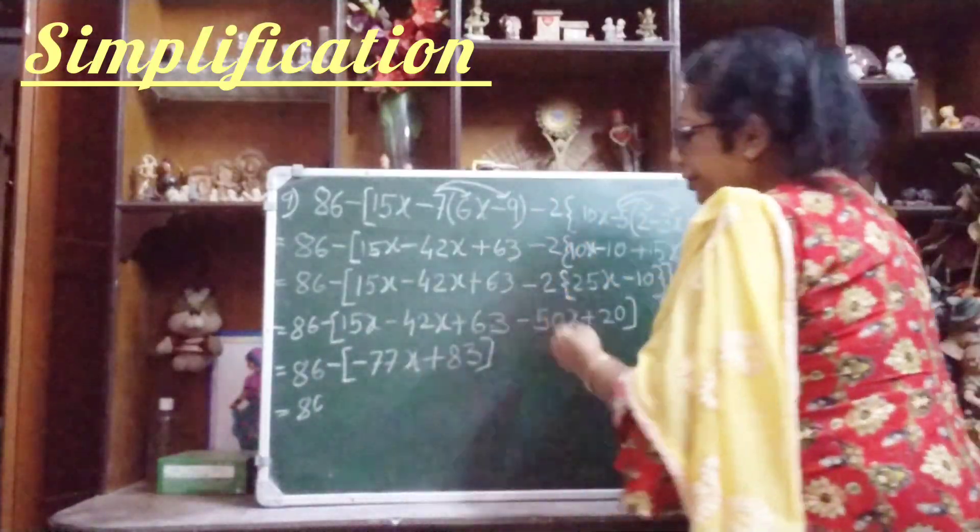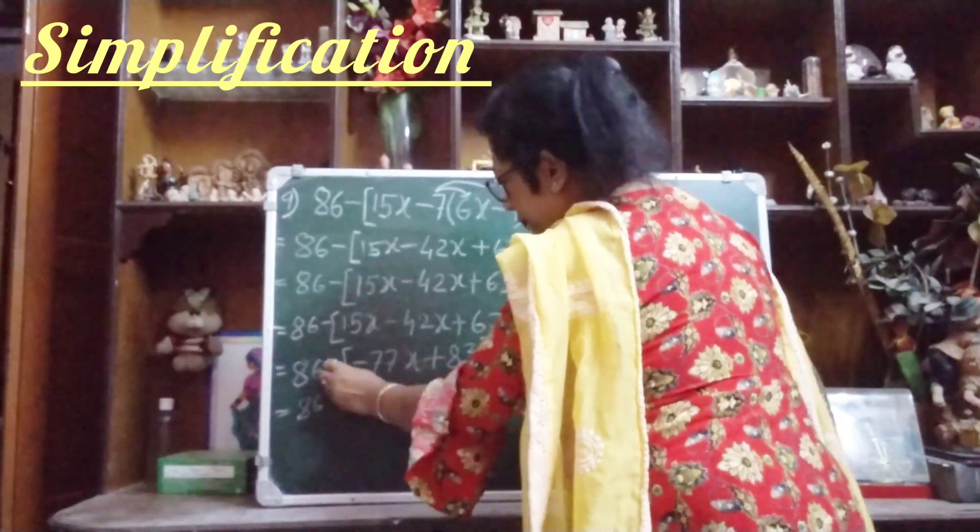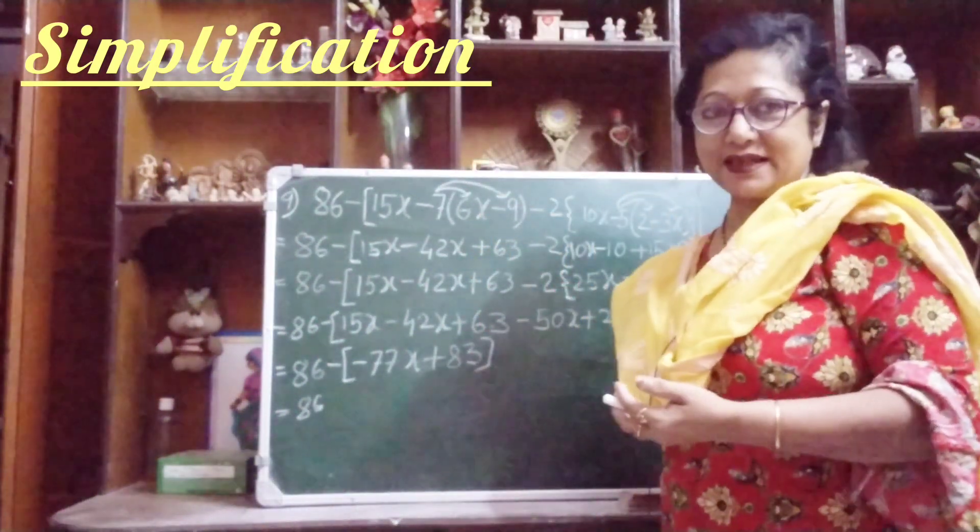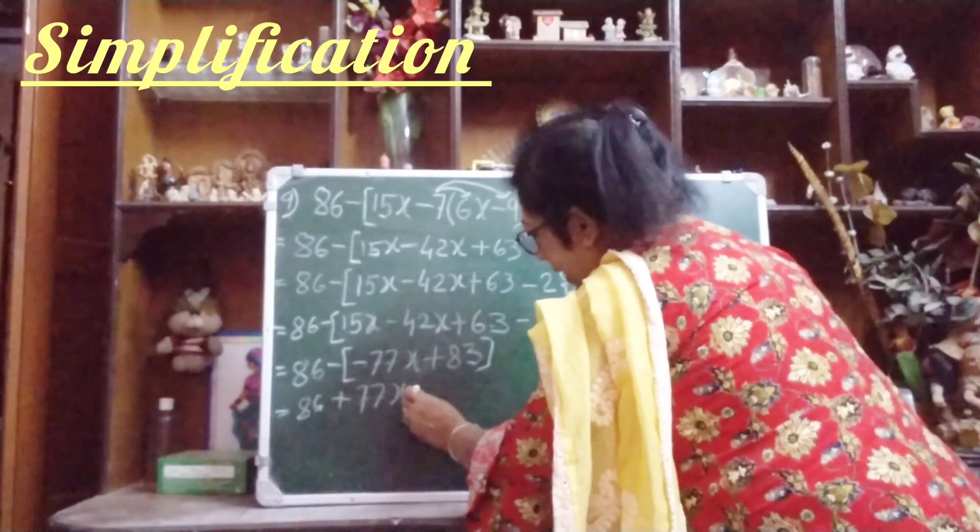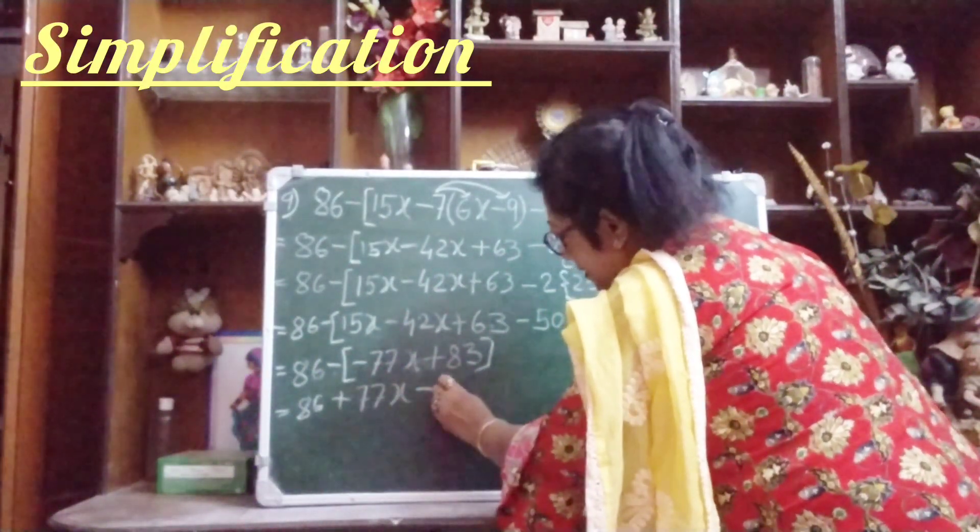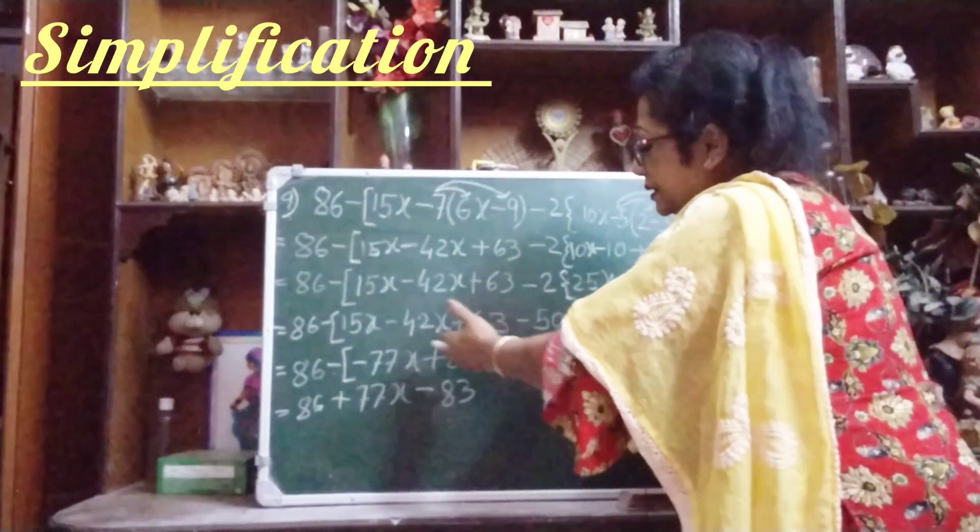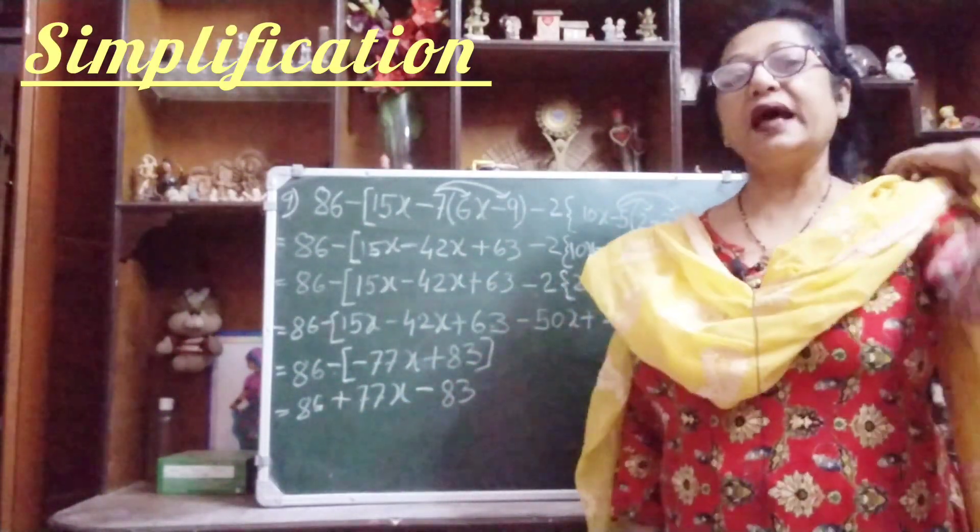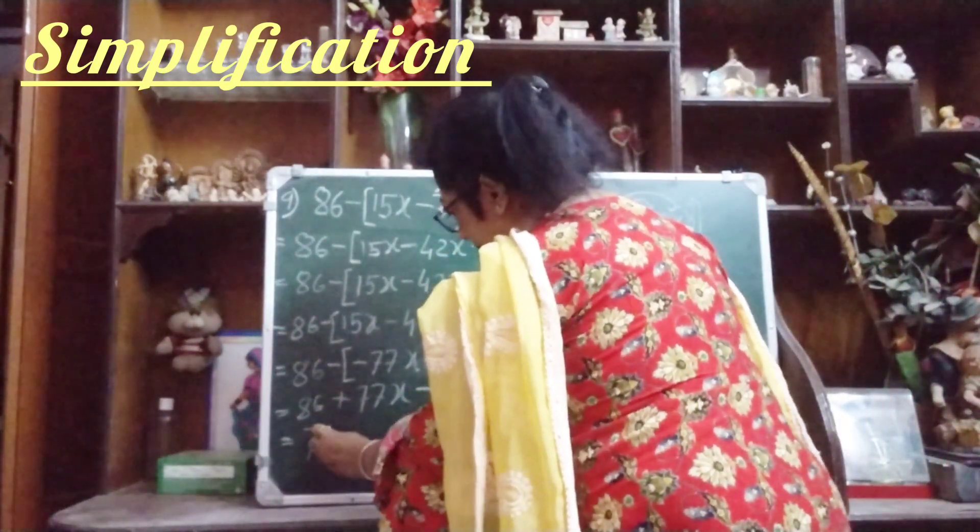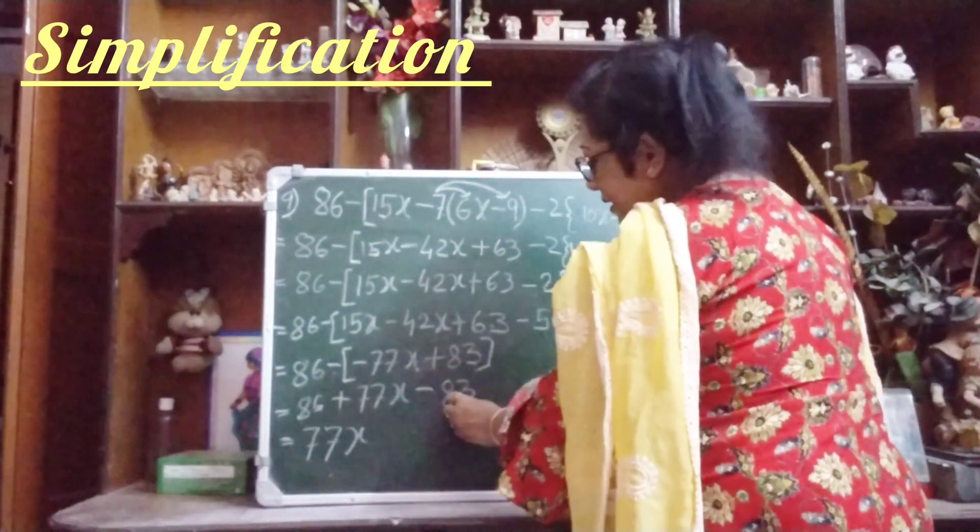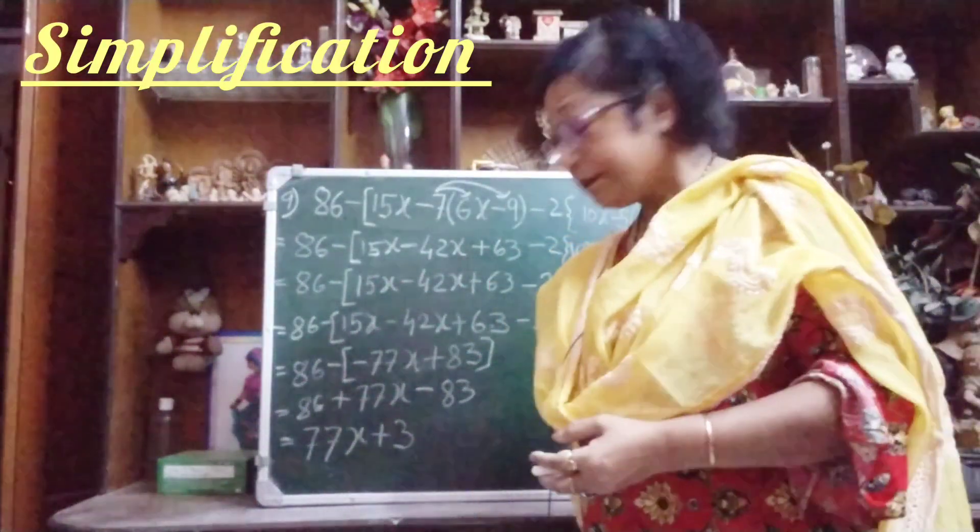86 minus is here, and inside the bracket minus 77x. So minus minus plus, we will write plus 77x, and minus plus is minus 83. Don't forget that before the bracket, if minus sign is there, then whatever the signs are there inside the bracket, that will change. Now you see 77x, so you write here 77x. Now 86 minus 83, so plus 3. You can write 3 plus 77x or 77x plus 3. This is the answer.